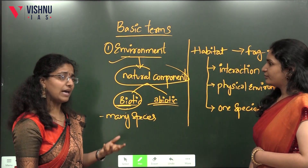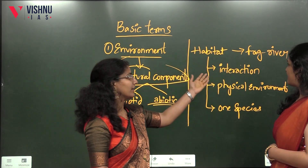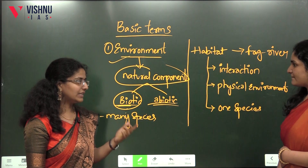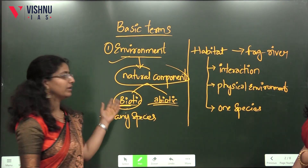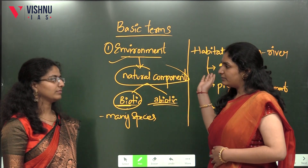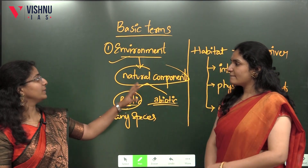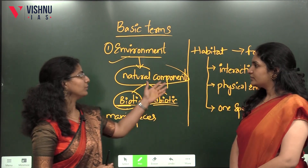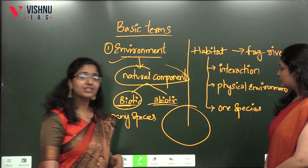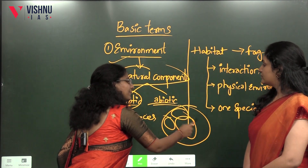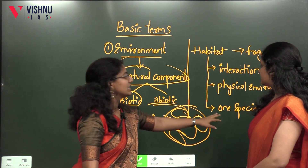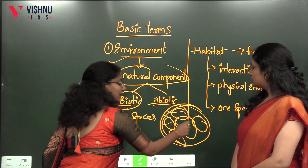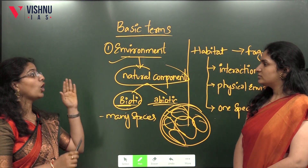Next, let's look at habitat. Habitat is the physical environment in which the interaction of a species takes place. Many people get confused between environment and habitat. Environment is a larger term — many habitats together make up an environment. One species interacting in a particular space is called a habitat. All habitats are part of the environment, but not all environments are habitats.